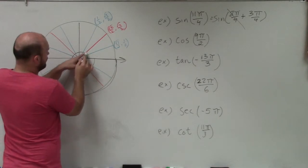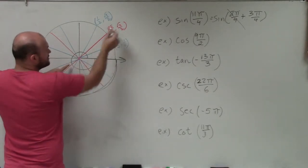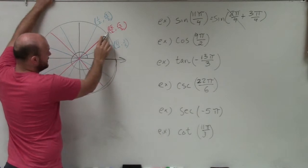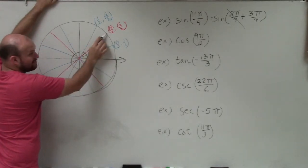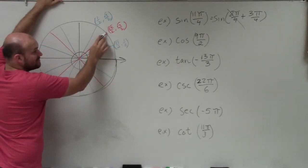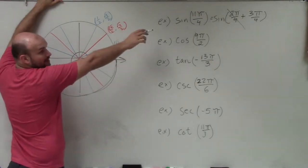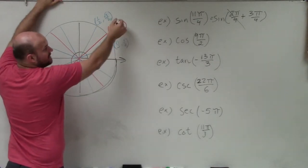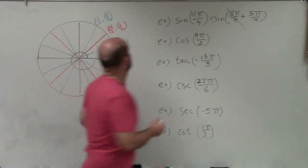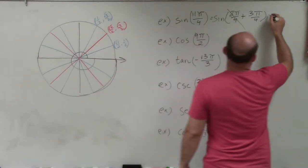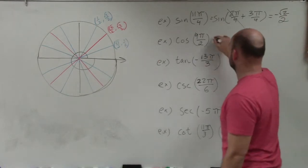The sine of 3π/4 — counting one π/4, two π/4, three π/4 — lands at the exact same reference point as π/4, except instead of being in the first quadrant it's now in the second quadrant. Wait — it's actually in the third quadrant. That means the y-coordinate, which represents sine on the unit circle, is going to be negative. So the answer is negative square root of 2 over 2.